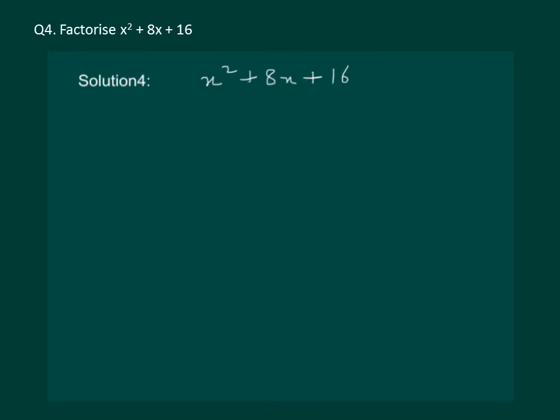We see that all the terms are positive. Also, we have x square. We have 16. That can be written as 4 whole square. So, let us see if we can use our identity: a plus b whole square is equal to a square plus 2ab plus b square.